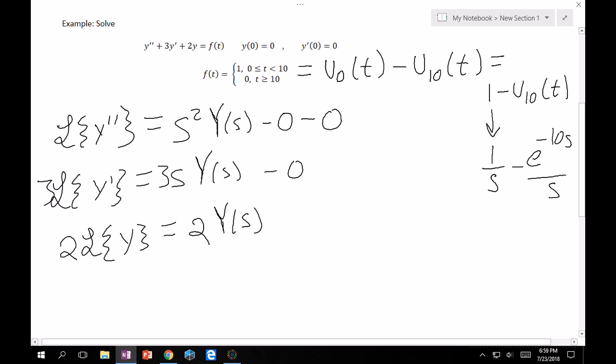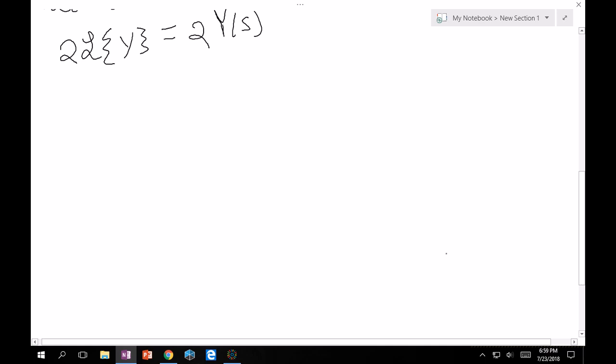We've taken Laplace of everything and added in our initial conditions. So now we're left with the following formula: s² + 3s + 2 times Y(s) equals the Laplace of u₀ - u₁₀, which is the same as 1 - u₁₀, which is 1/s - e^(-10s)/s. Then we want to get just Y(s) by itself.